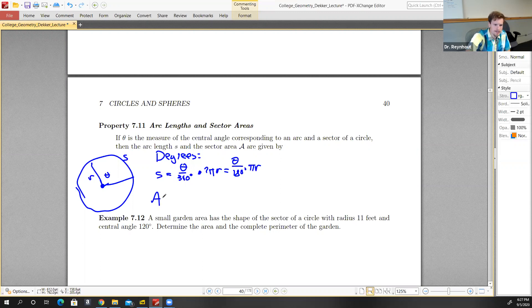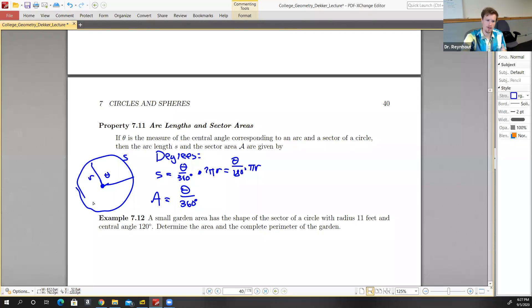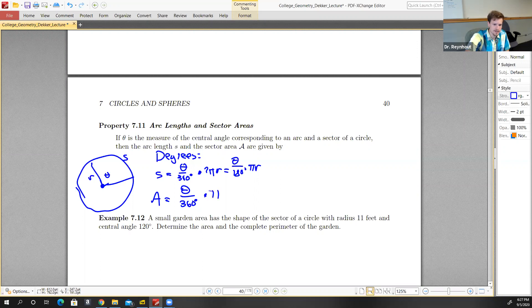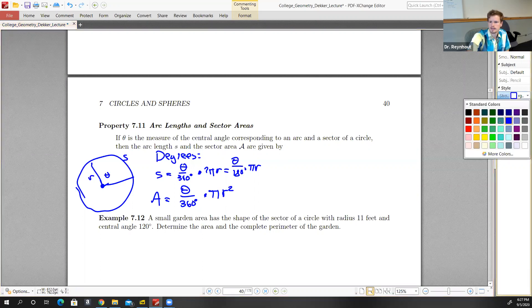And the area is pretty much the same situation. Theta divided by 360 degrees - this is the portion of the disk that we're looking at - times the area of the entire disk, which would be πr².